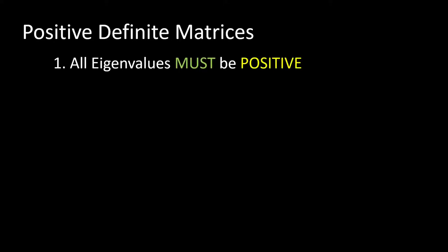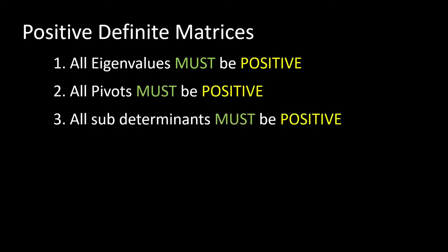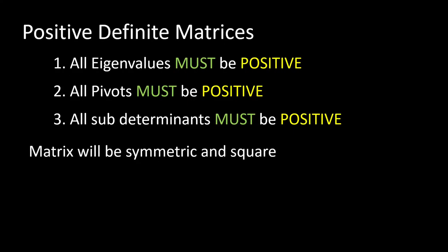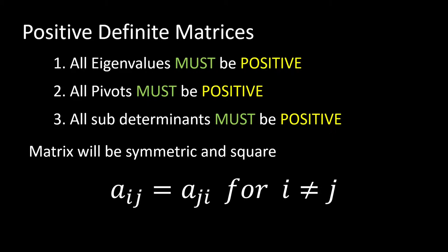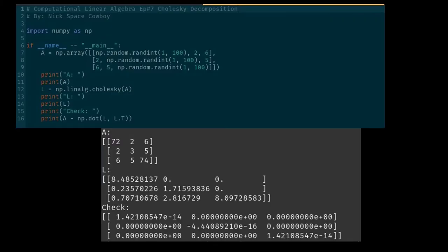First, all the eigenvalues of a positive definite matrix must be positive. All the pivots must also be positive, and all the sub-determinants of the matrix must also be positive. Generally speaking, the matrix will be symmetric and square. For this video, we're only considering symmetric and square matrices, meaning any off-diagonal values where i ≠ j satisfy a_ij = a_ji. There will be links in the description for more resources on positive definite matrices.